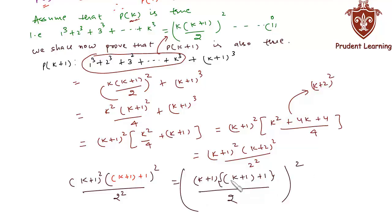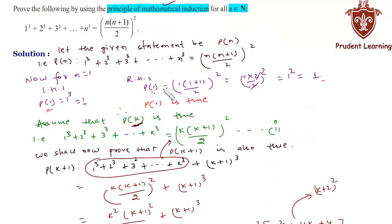Hence we can say that P(k+1) is true whenever P(k) is true. So from the principle of mathematical induction, we can say that the statement P(n) is true for all natural numbers n. This completes our solution.